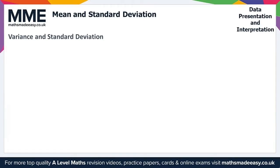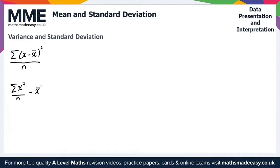Moving on now to variance and standard deviation. Variance, like range, is a measure of the spread of the data. However, variance is a more intelligent measure than range because it takes all of the data into account. The formula for variance looks quite complicated, however it's not too bad. The formula for the variance is sigma of x minus x-bar, all squared, divided by n. We can also express the variance as sigma x squared over n minus x-bar squared, or as sigma fx squared over sigma f minus x-bar squared.